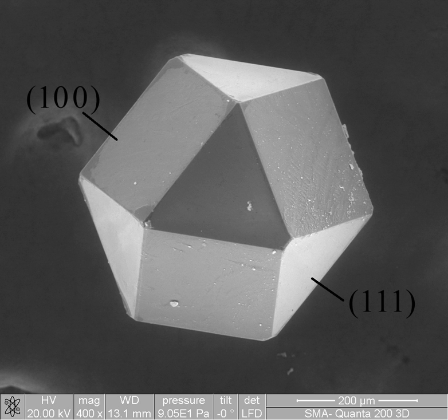Macrostructure is the appearance of a material in the scale millimeters to meters—it is the structure of the material as seen with the naked eye.